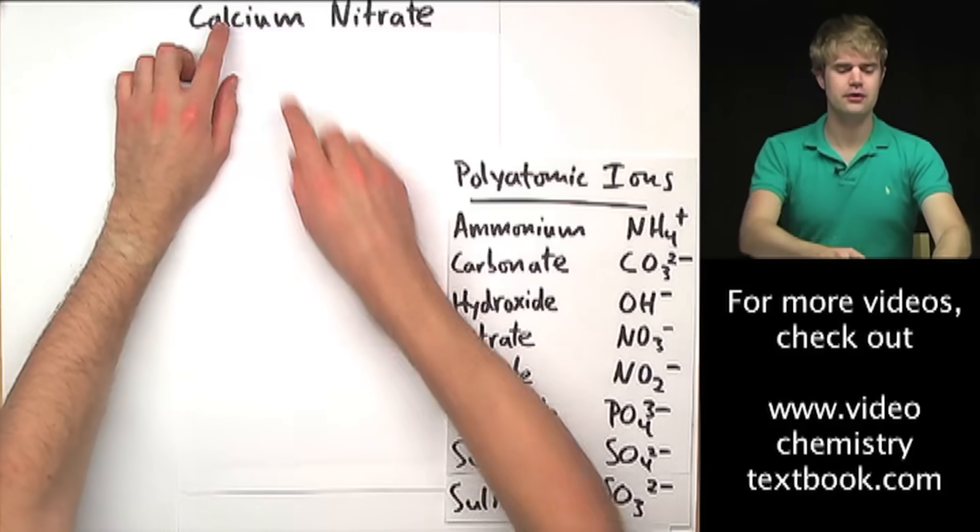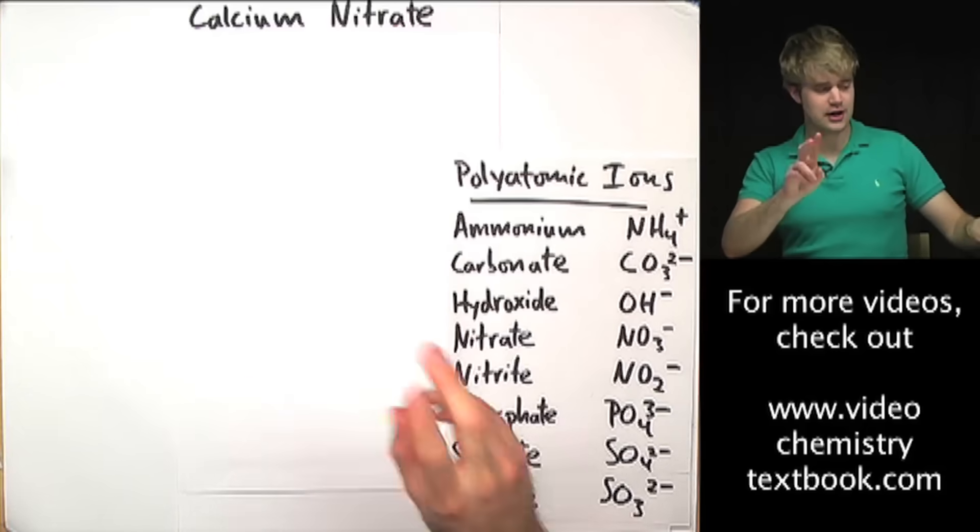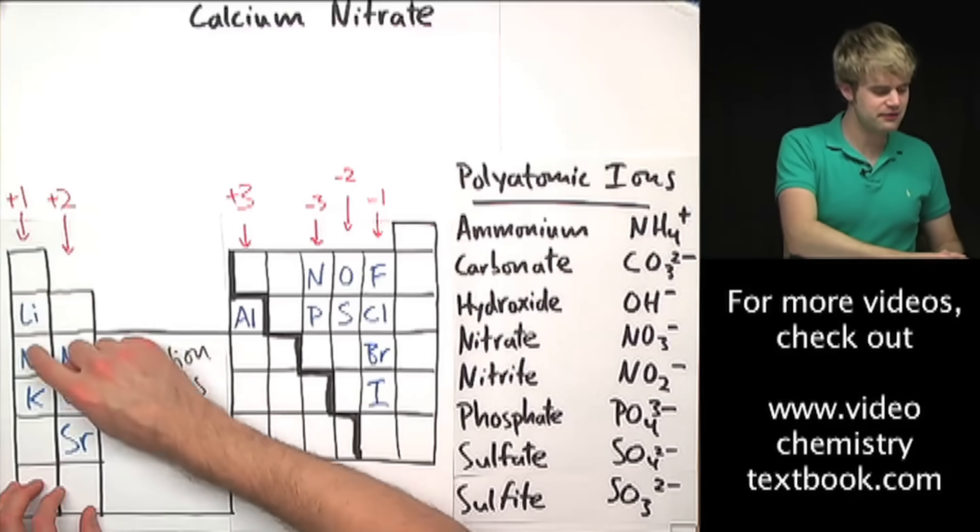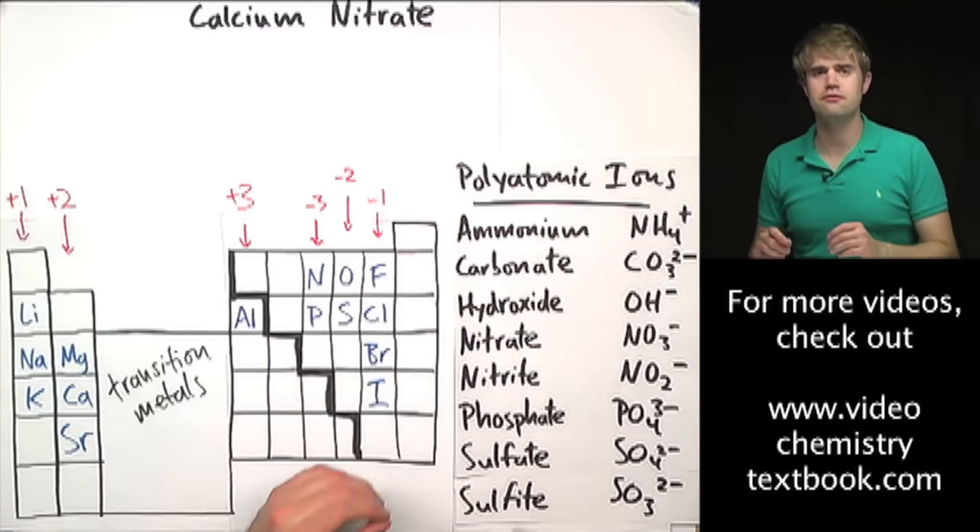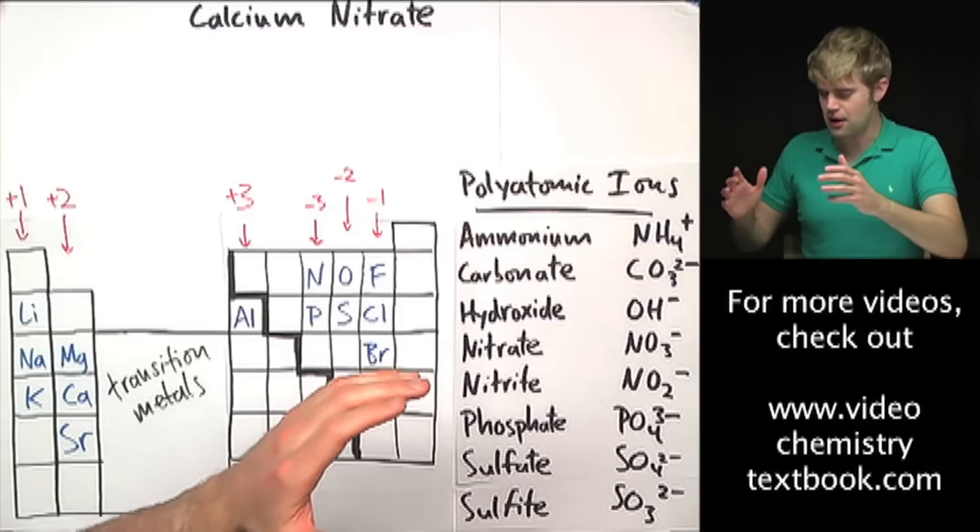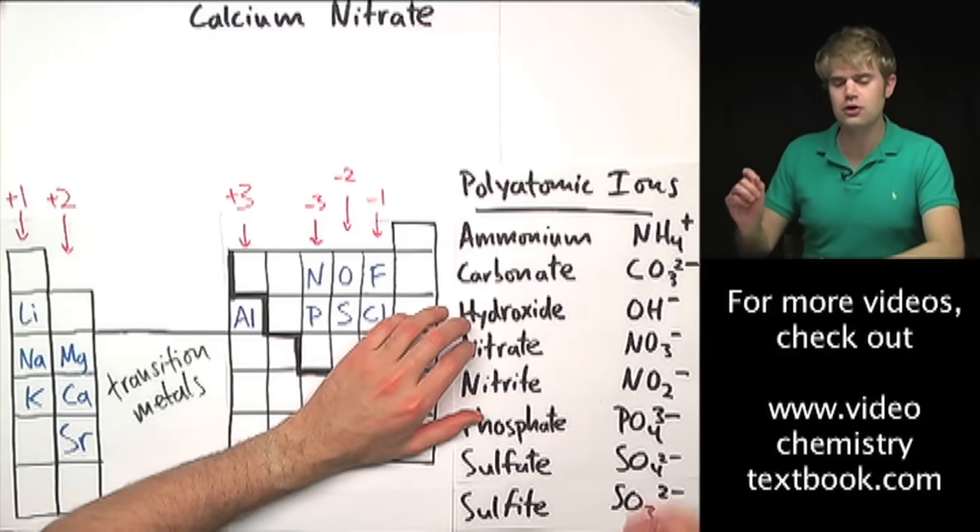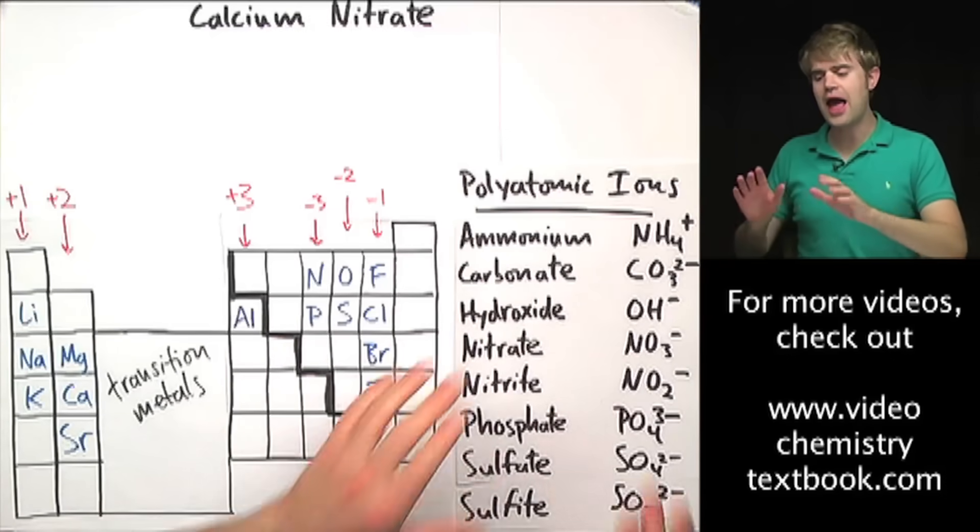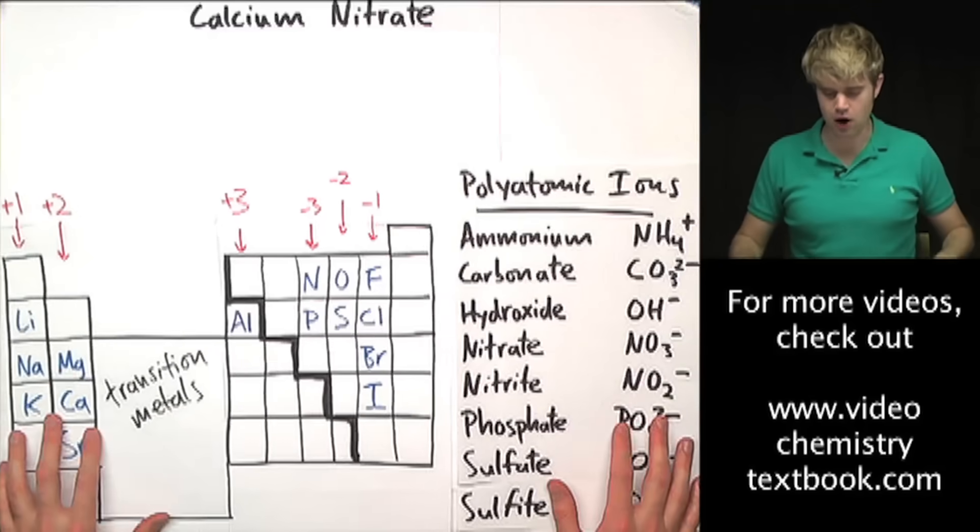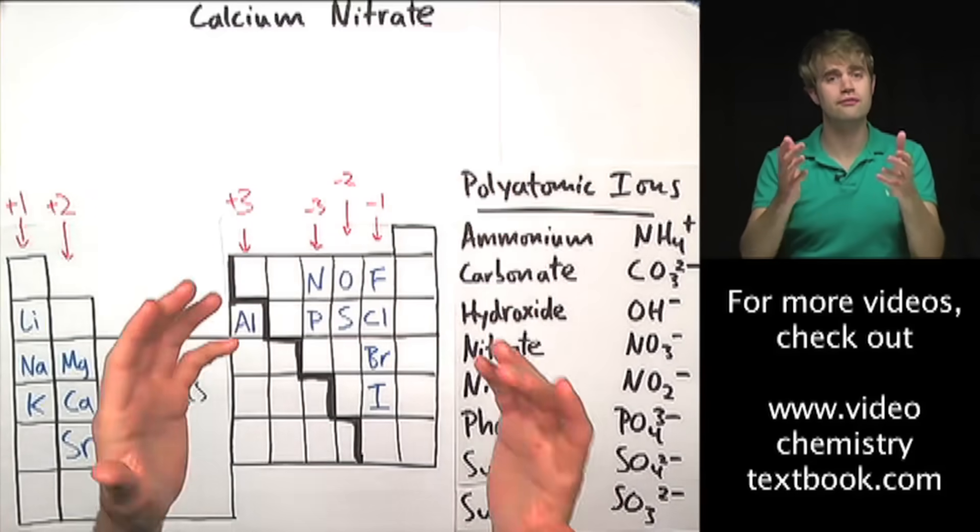So here is the name of a compound: calcium nitrate. Let's go through the steps to write the chemical formula. There are two things you'll need. The first is a periodic table. I'm using a version where I've left out a lot of the elements because they're distracting, but kept the important ones. And then you'll need a list of polyatomic ions. This is a short list of my favorites. Since we're talking about polyatomic ions, the compounds we're writing are ionic compounds, which means we need to find out the charges on both things to write the formula.